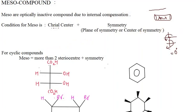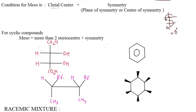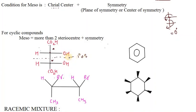When we have a cyclic compound, meso requires more than two stereocenters and it should have symmetry. Looking at the first molecule, it has two chiral carbons, but there is a plane of symmetry. So it is named a meso compound. If light rotates in one direction, the other part rotates it back, giving an overall output of zero — due to internal compensation.